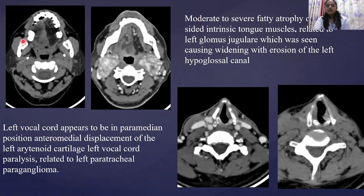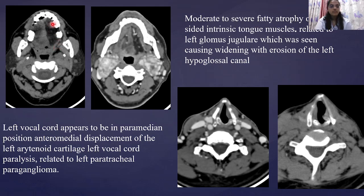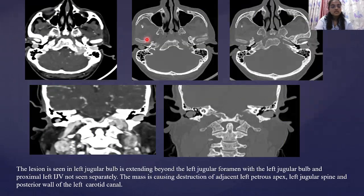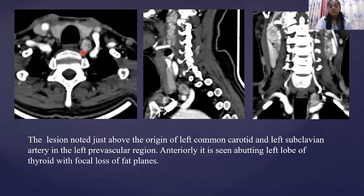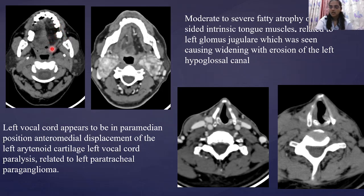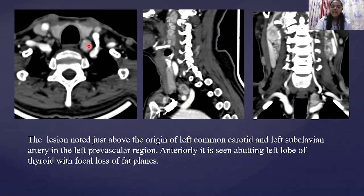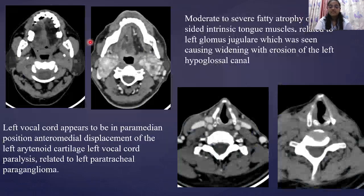Two very conclusive findings on imaging were: first, moderate to severe atrophy of the intrinsic tongue muscles on the left side, attributed to the glomus jugulare causing destruction of the hypoglossal canal, leading to nerve compression and subsequent tongue muscle atrophy. Second, the left vocal cord was paramedian in location — indicating left vocal cord paralysis — attributed to the left paratracheal lesion causing compression of the left recurrent laryngeal nerve.